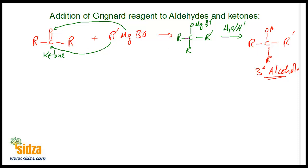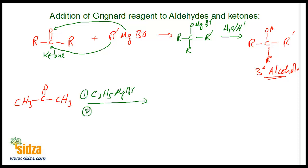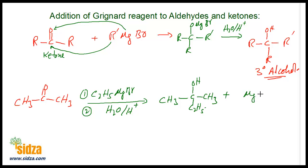Two alkyl groups are from the ketone and one alkyl group is from the Grignard's reagent. For example, take acetone CH₃COCH₃ and react with ethyl magnesium bromide C₂H₅MgBr. After hydrolysis, the alkyl group attaches to the carbon and hydrogen attaches to the oxygen. You get CH₃-C(OH)(C₂H₅)-CH₃ plus MgBr(OH). This is our tertiary alcohol — a 3° alcohol.